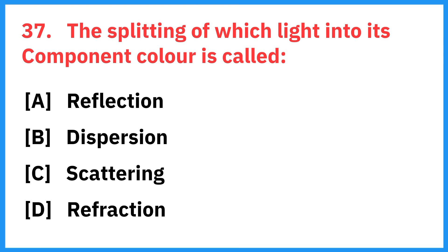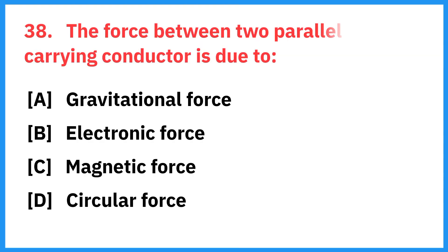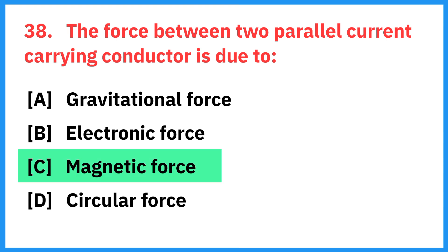The splitting of white light into its component colors is called? Right answer is dispersion. The force between two parallel current-carrying conductors is due to? Right answer is magnetic field.